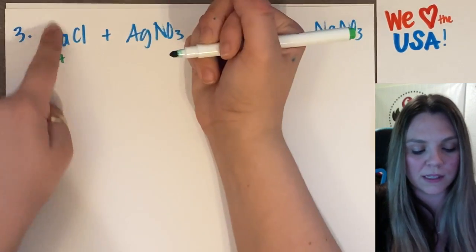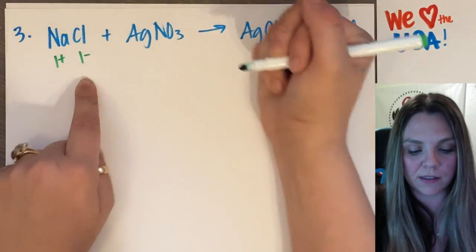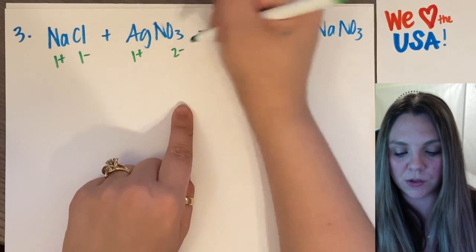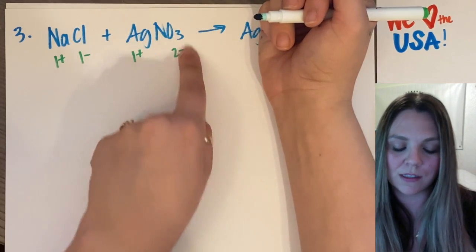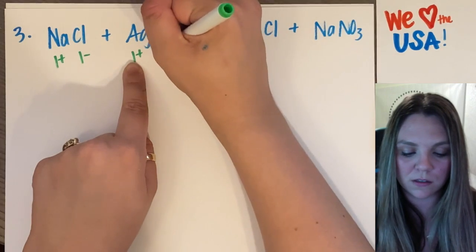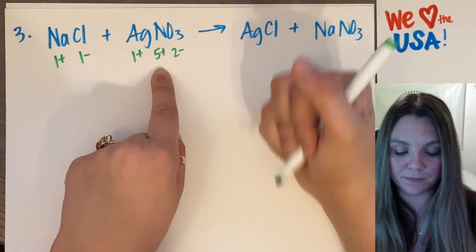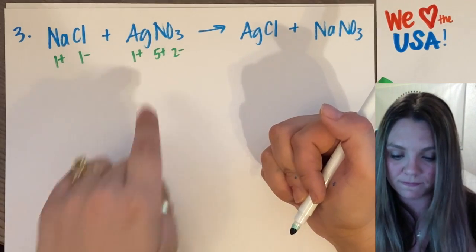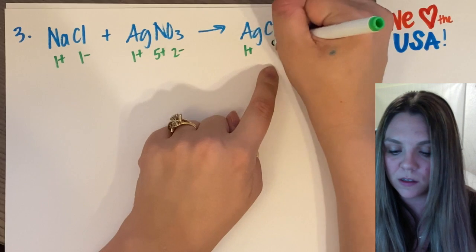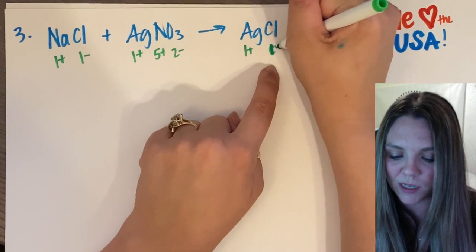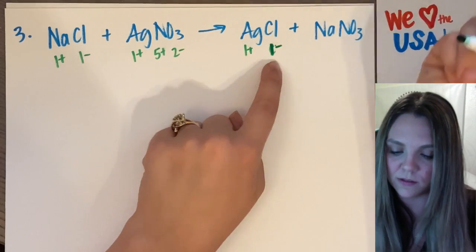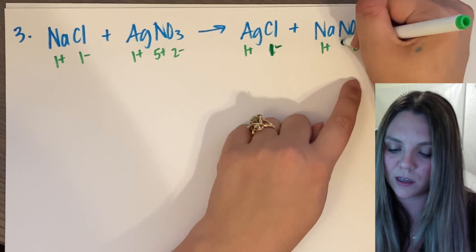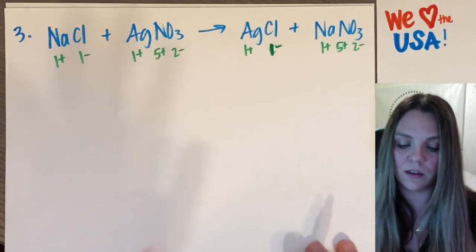Sodium gets a one plus, it's alkali, chlorine one minus. Silver nitrate, silver is going to get a one plus, oxygen has a two minus. So that's a six minus, plus one, it's going to be five plus for nitrogen. If you need practice doing oxidation numbers, go practice that. Silver is a one plus. Chlorine is a one minus. One plus, two minus, and five plus.